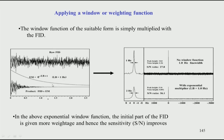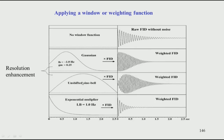Nowadays these processing steps are done automatically in spectrometers by typing commands, so many users and students are unaware of what is happening behind the screen. This discussion is meant to show what actually happens when you process the data. Different window functions exist — you can take only the first part of the signal or multiply with different functions — and the choice of function affects the result.